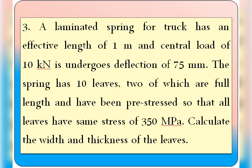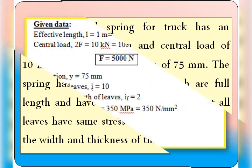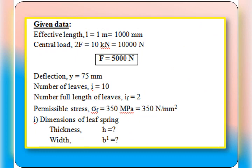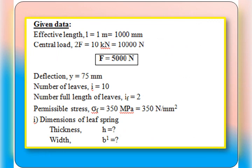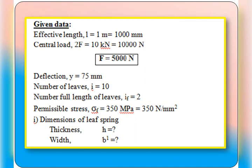Now we will list out the data for this particular problem. Effective length L is equal to 1 meter, that is 1000 mm. Central load: 2F is equal to 10 kilo Newton, that is 10,000 Newton, so half of that, F is equal to 5000 Newton. Deflection y is equal to 75 mm.